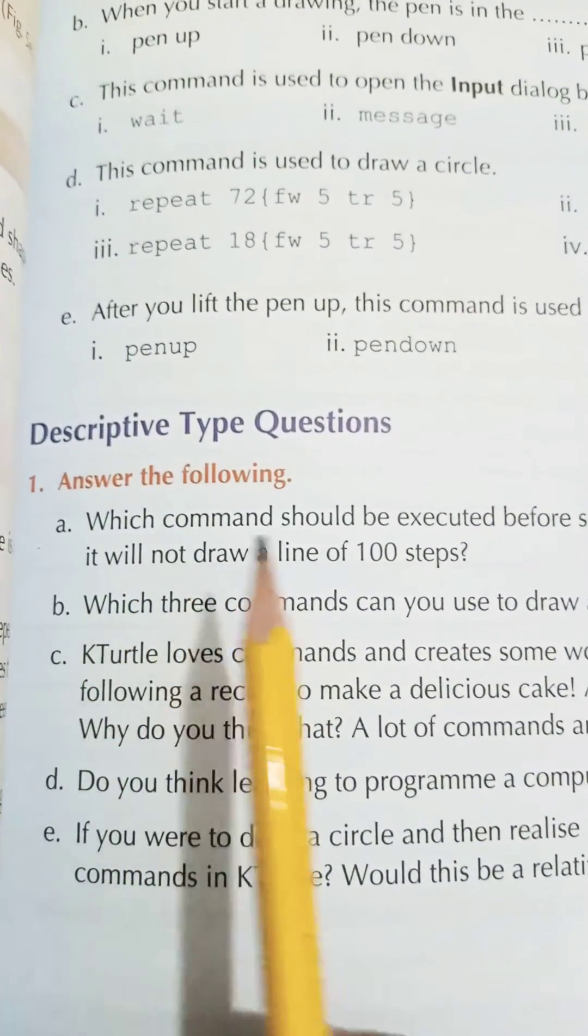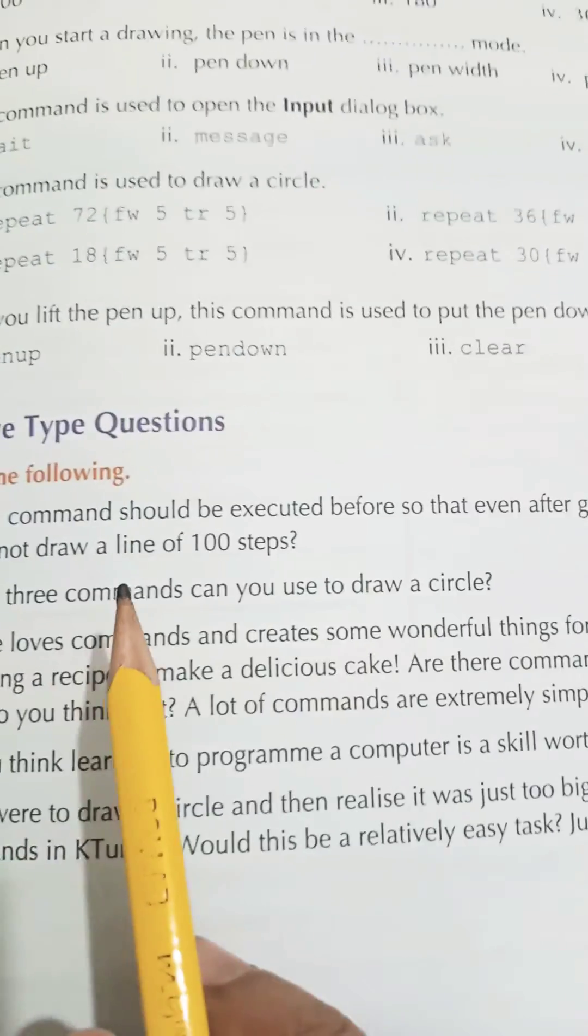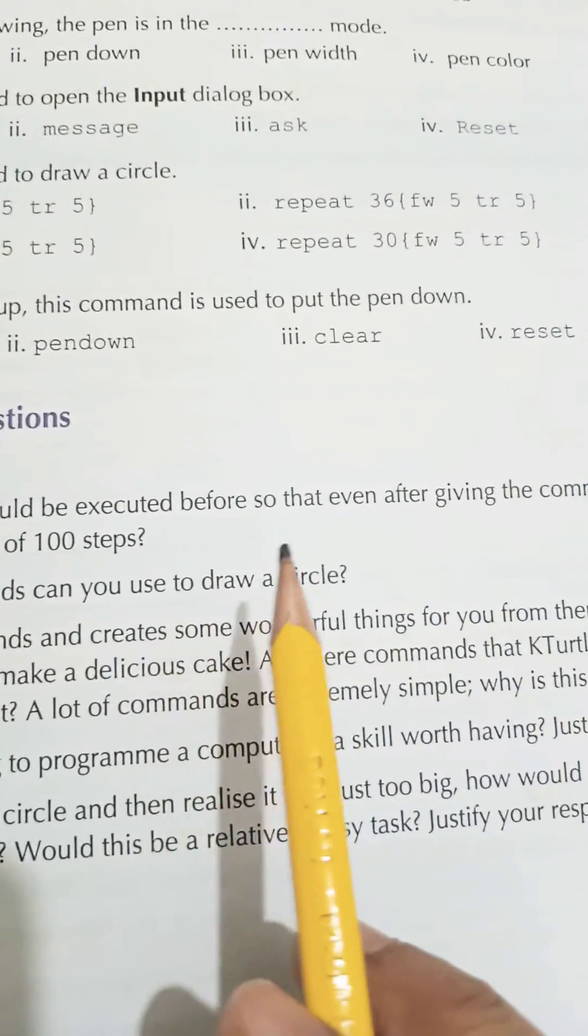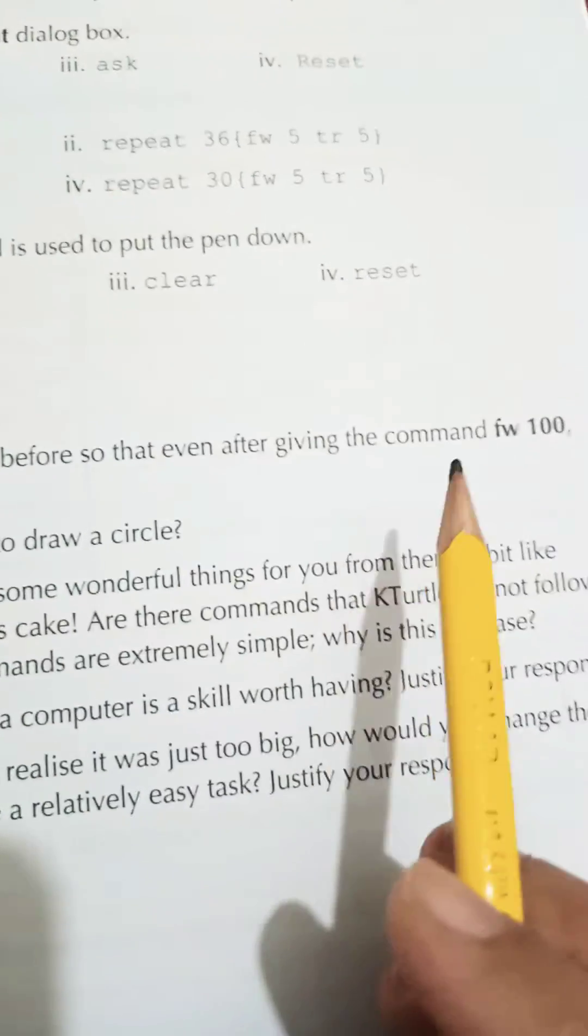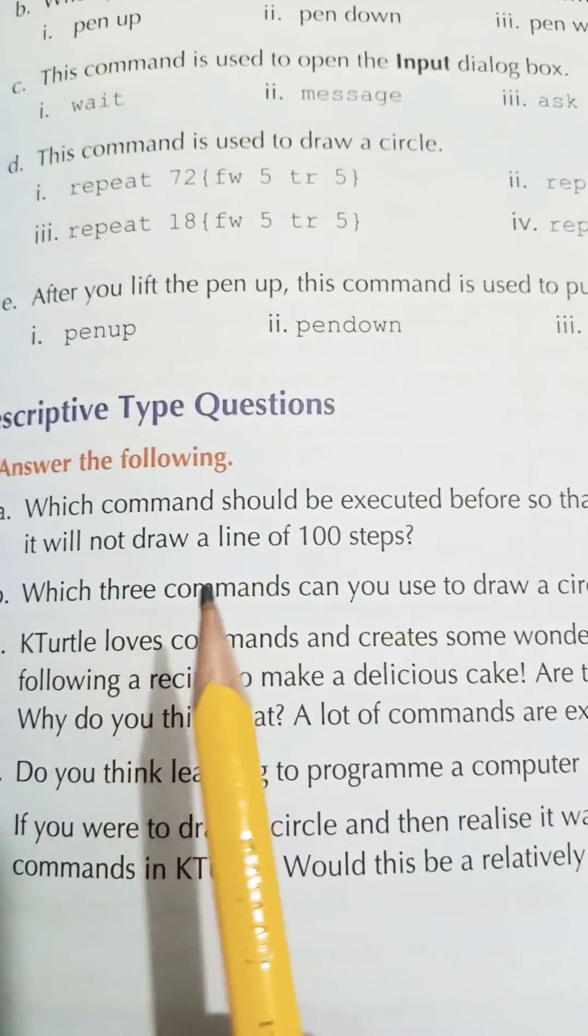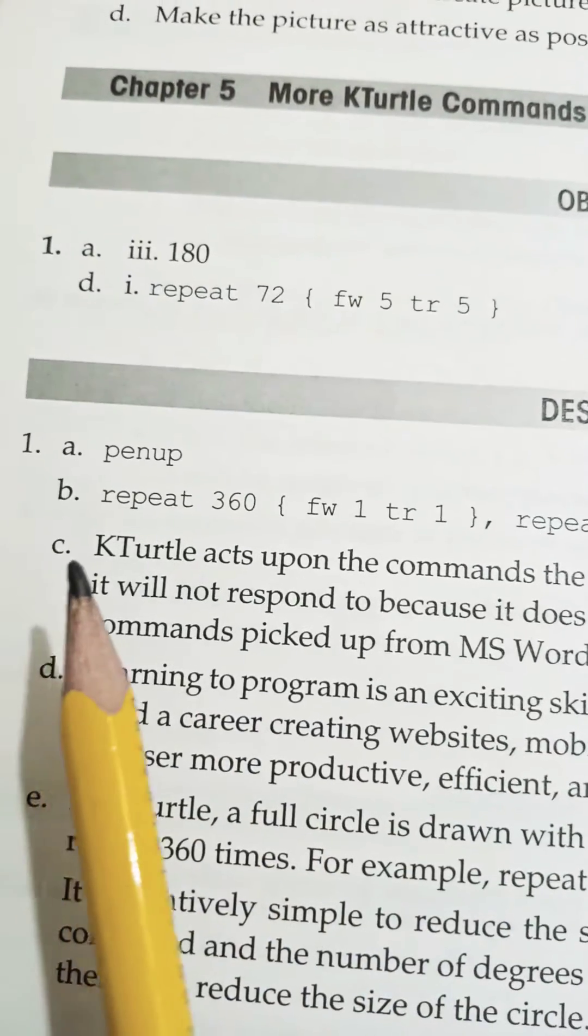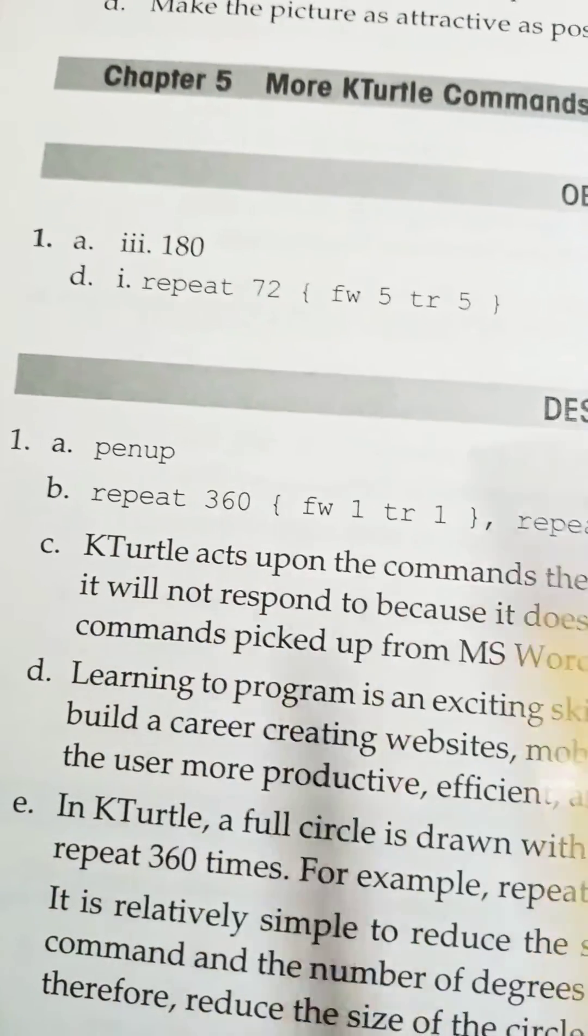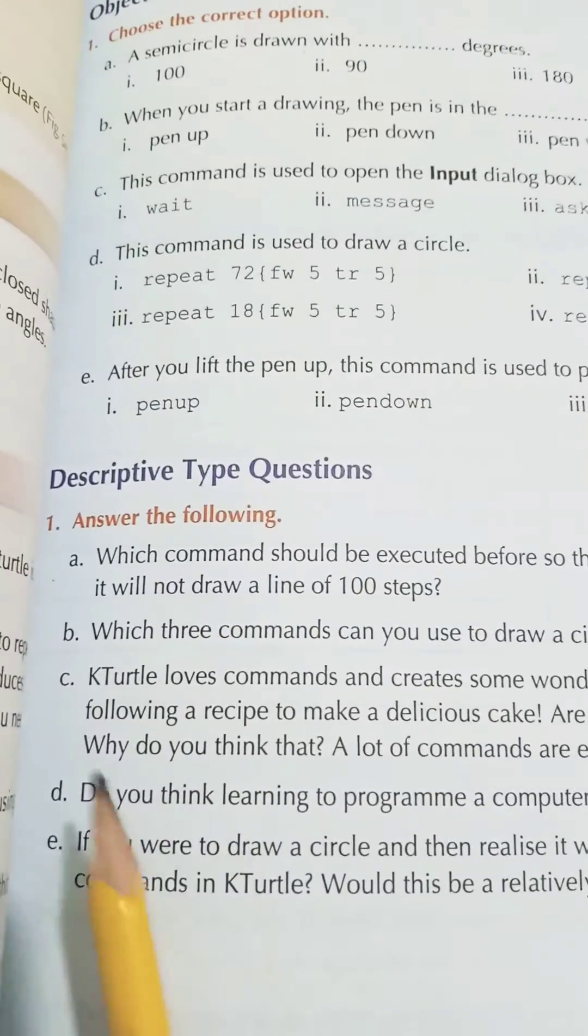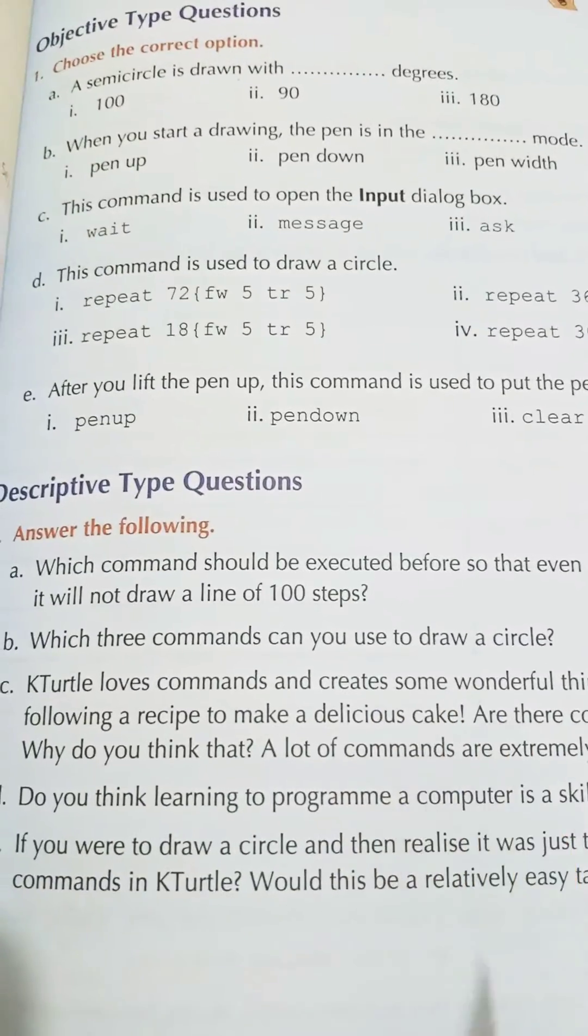Question number one, answer the following. Part number a: which command should be executed before so that even after giving the command fw space hundred it will not draw a line of hundred steps? So the command is pen up. Okay, part number b: which three commands can you use to draw a circle?